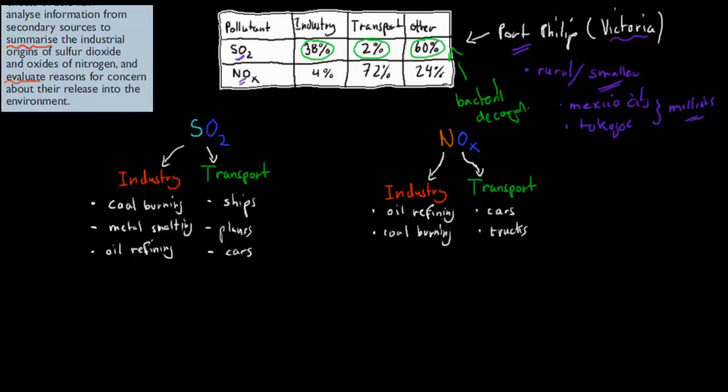Now, for nitrogen oxides, 4% comes from industry, 72% comes from transport, and 24% comes from other. So things like lightning storms, for example, also causes a bit of it, but 72% from transport.